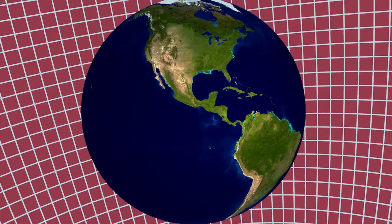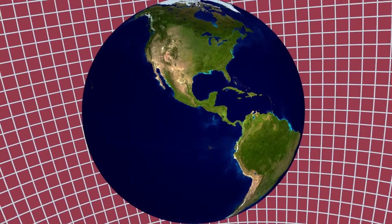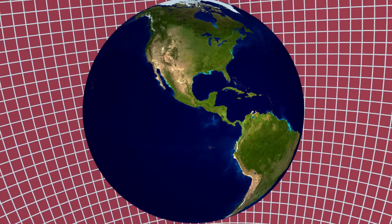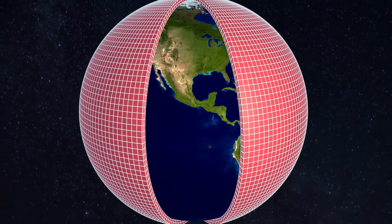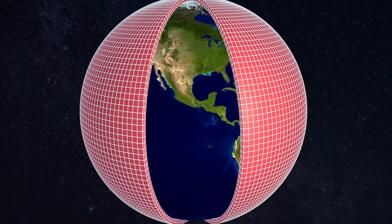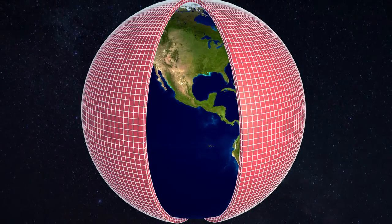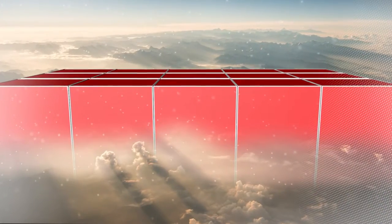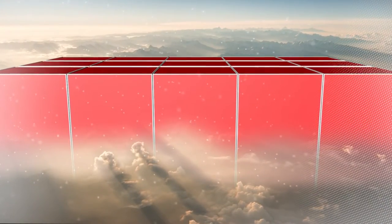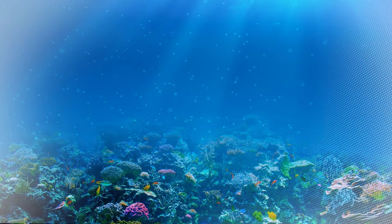Imagine trying to simulate the continuous Earth system in a computer model. Global climate models work by dividing up the Earth's atmosphere, oceans, land, and sea ice into lots of three-dimensional boxes or grid cells. Modern global climate models can have grid cells that are 50 miles square in the horizontal and that can go up to 90 levels in the atmosphere and down to 60 levels in the ocean.